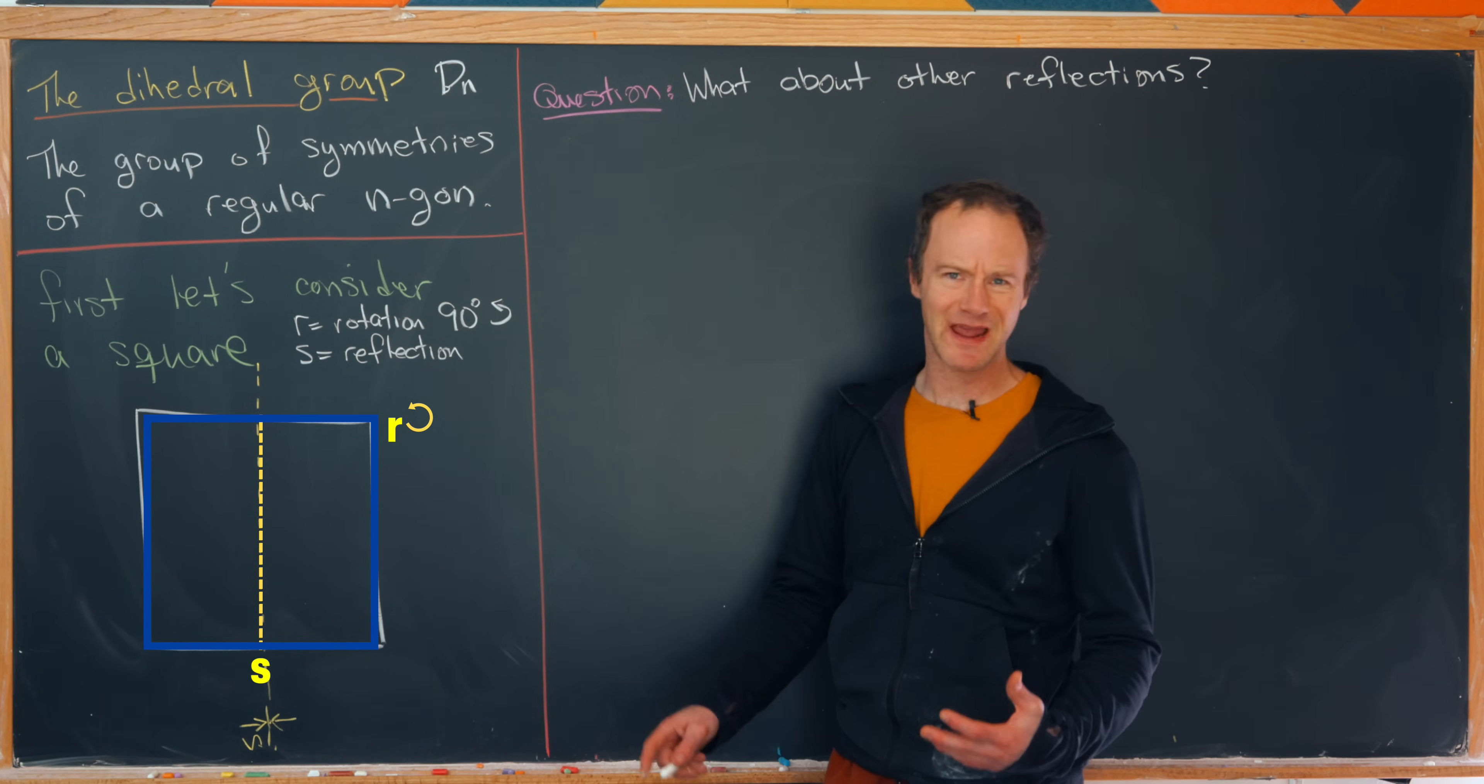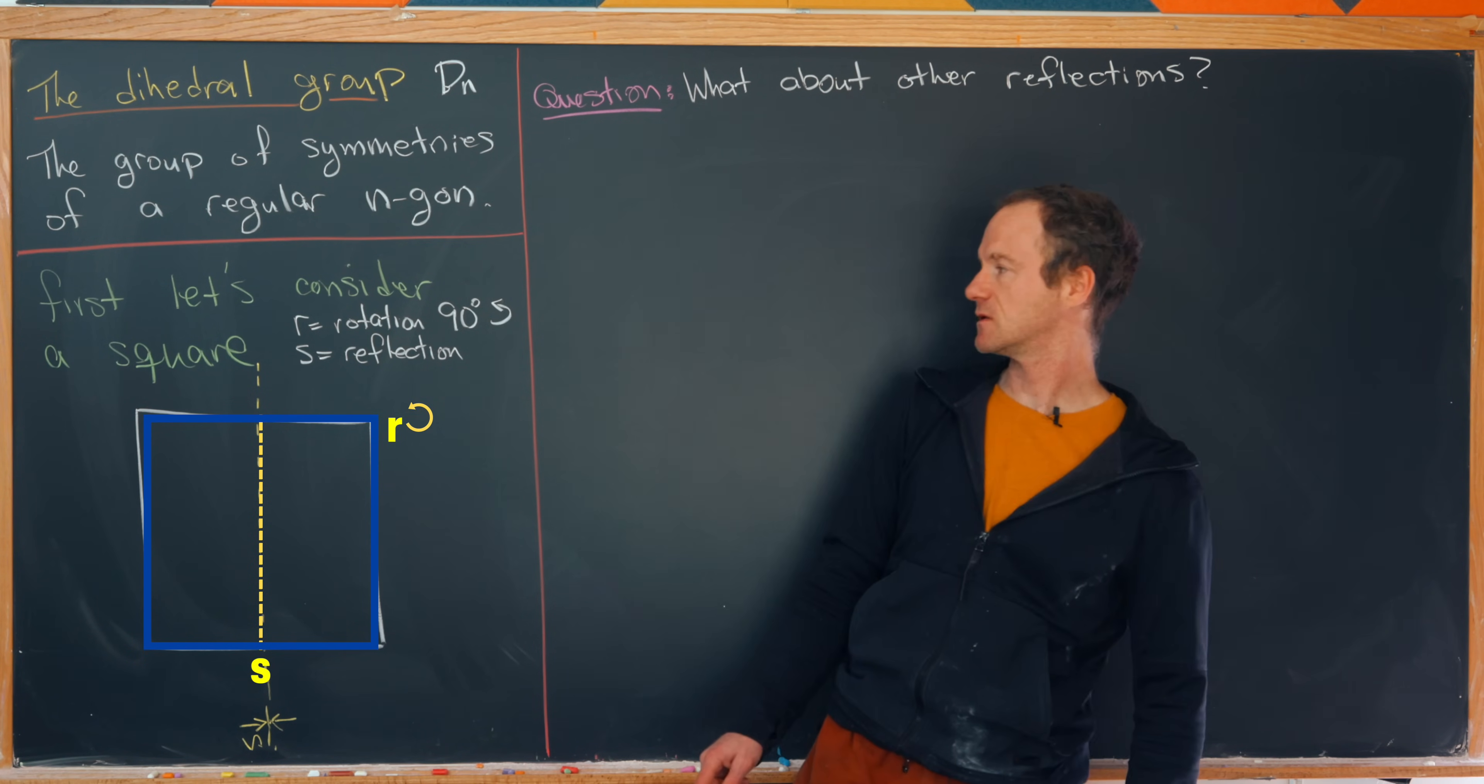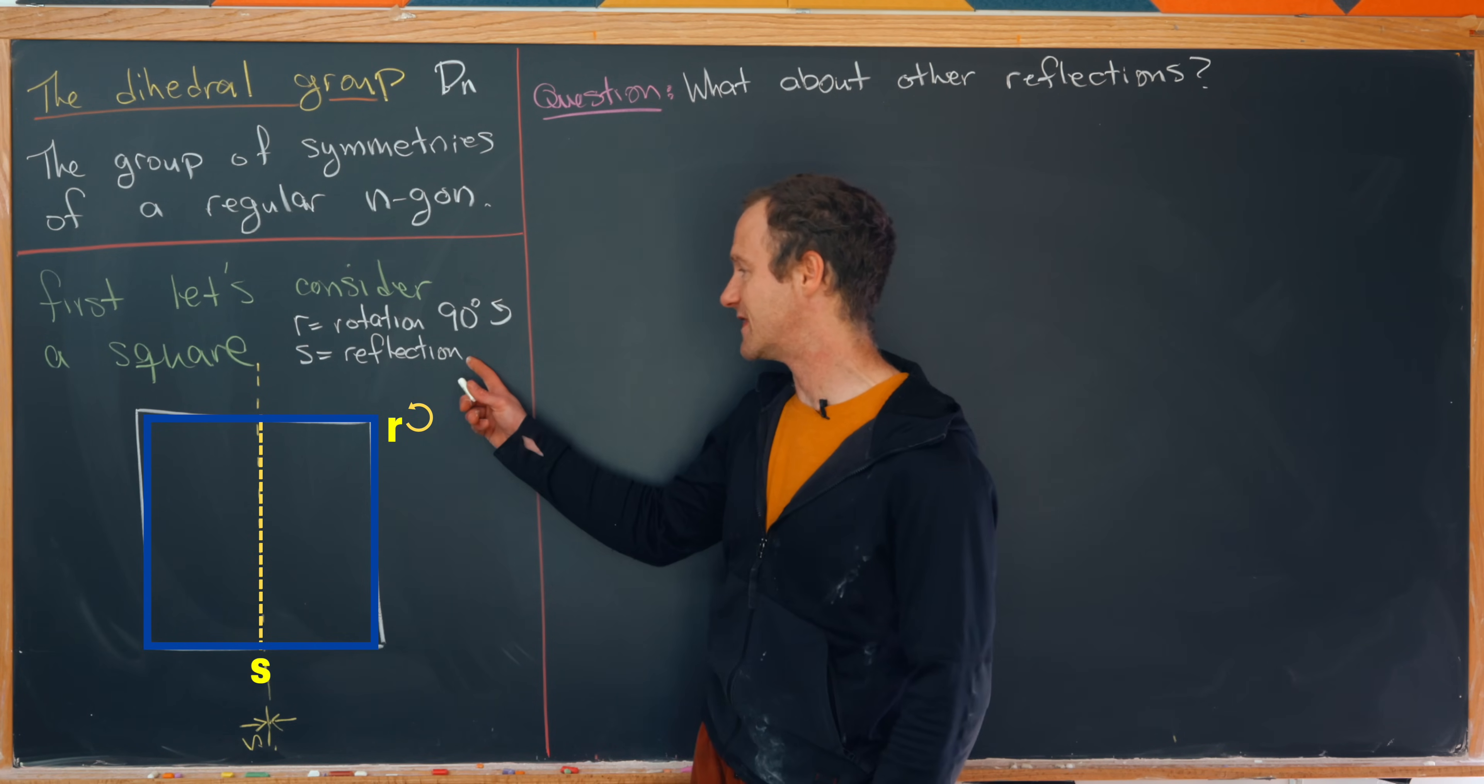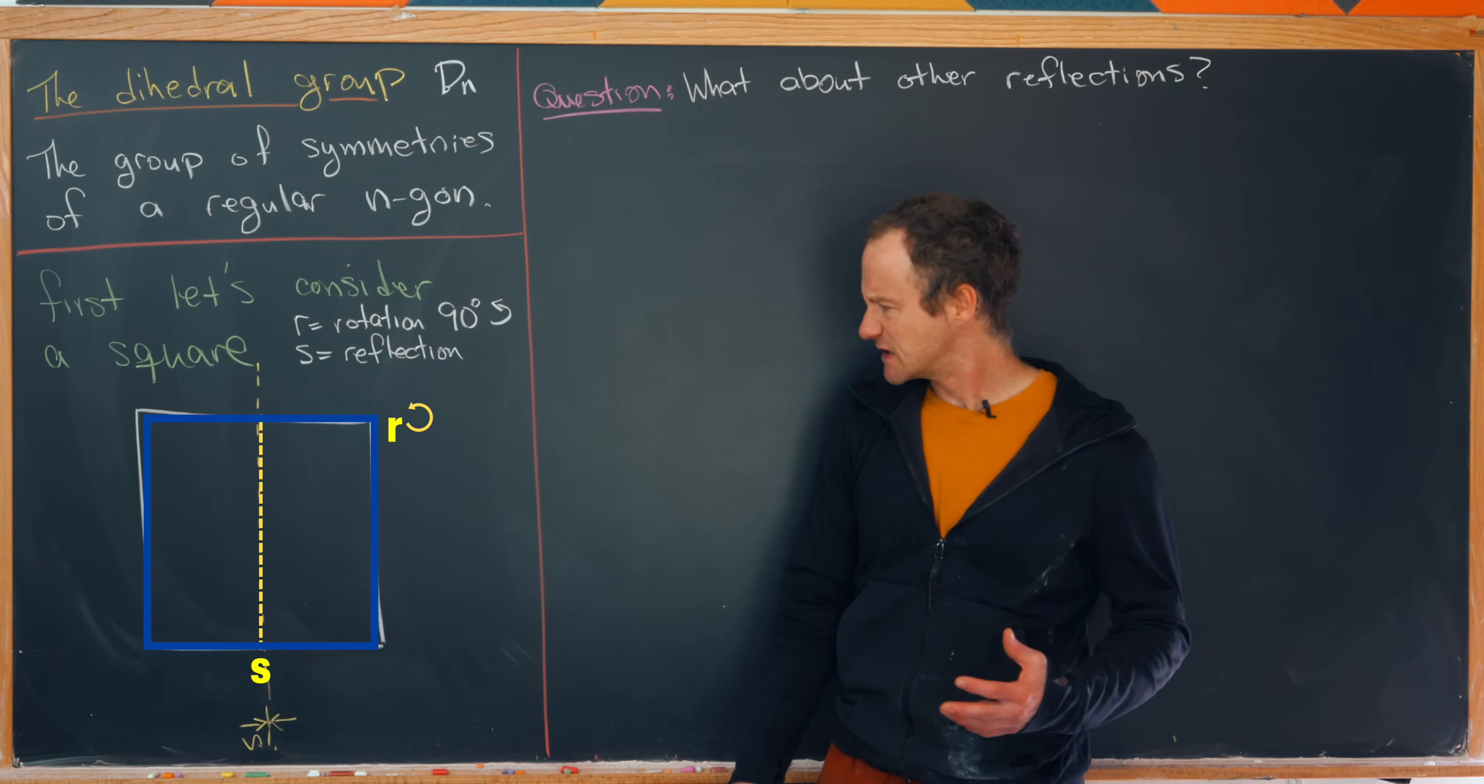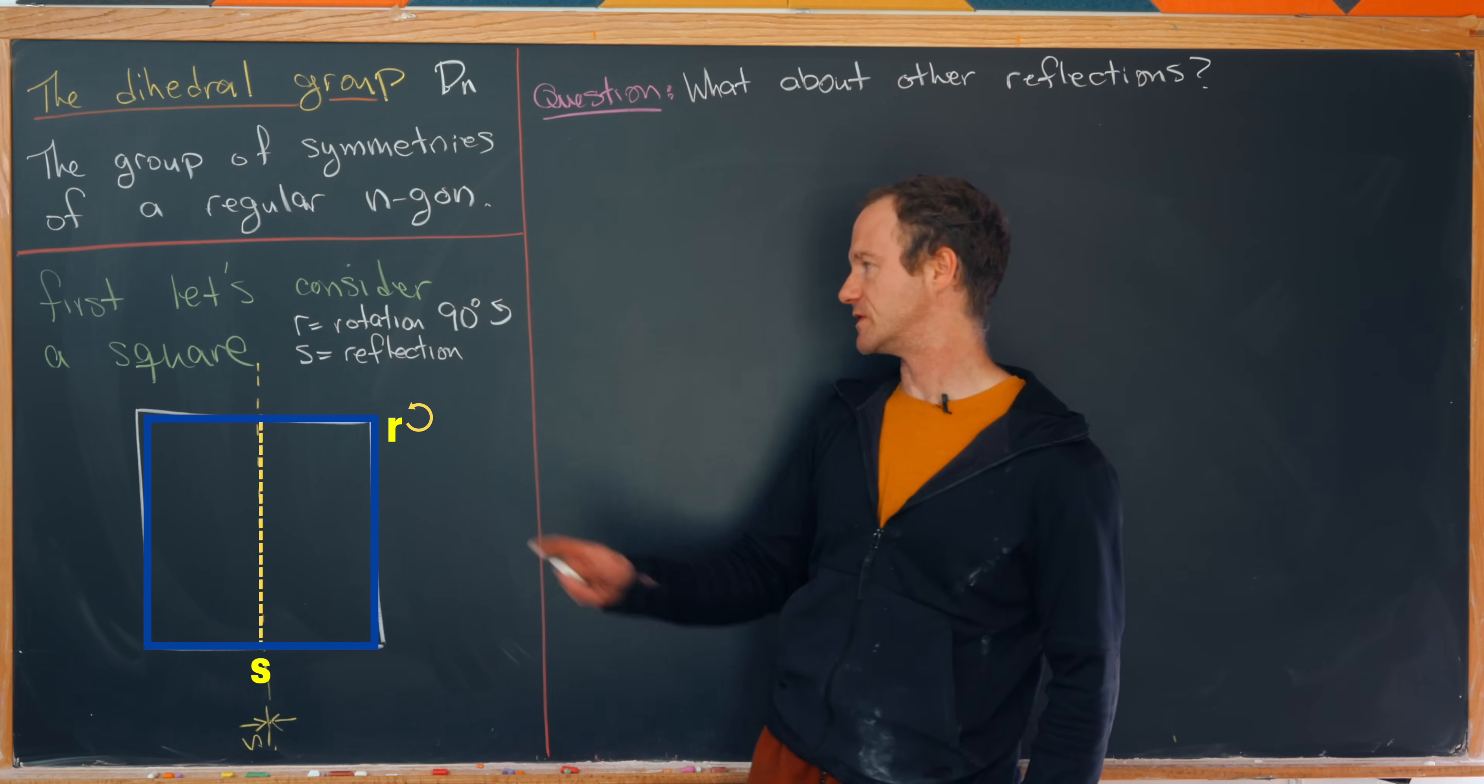And there are two main symmetries that we can start with and we'll see that we can build the rest of the symmetries out of this. There's r, which is rotation counterclockwise by 90 degrees. And then there's this s, which is a reflection about this yellow dotted line.